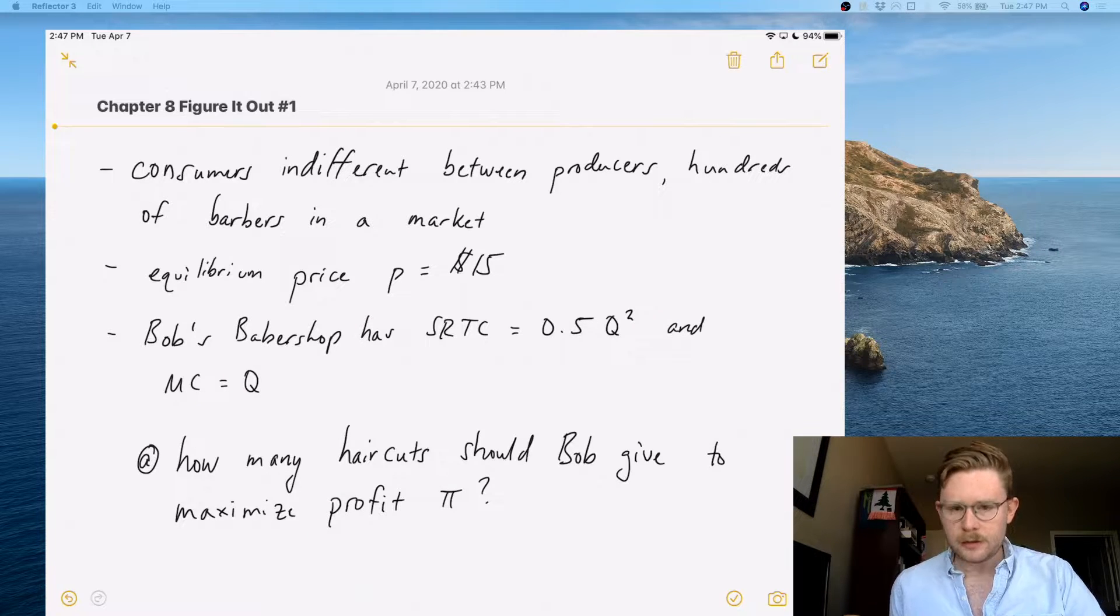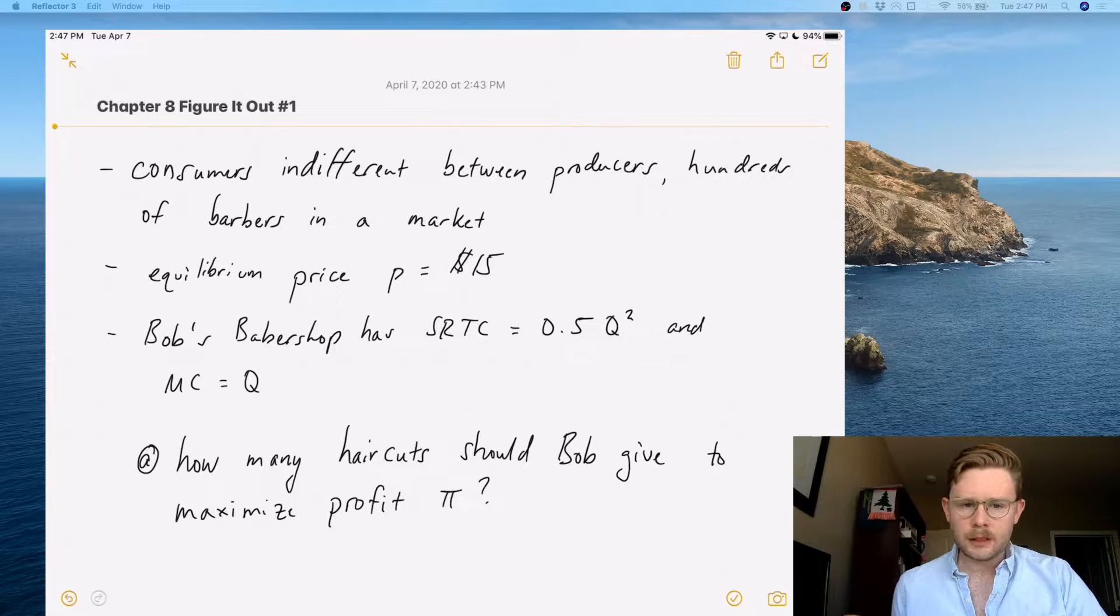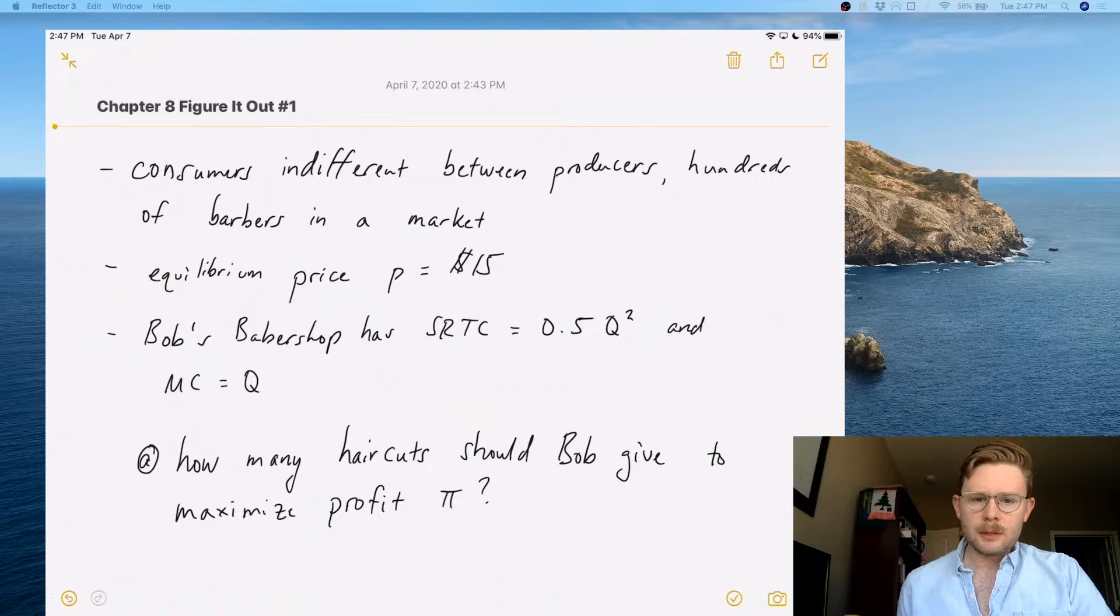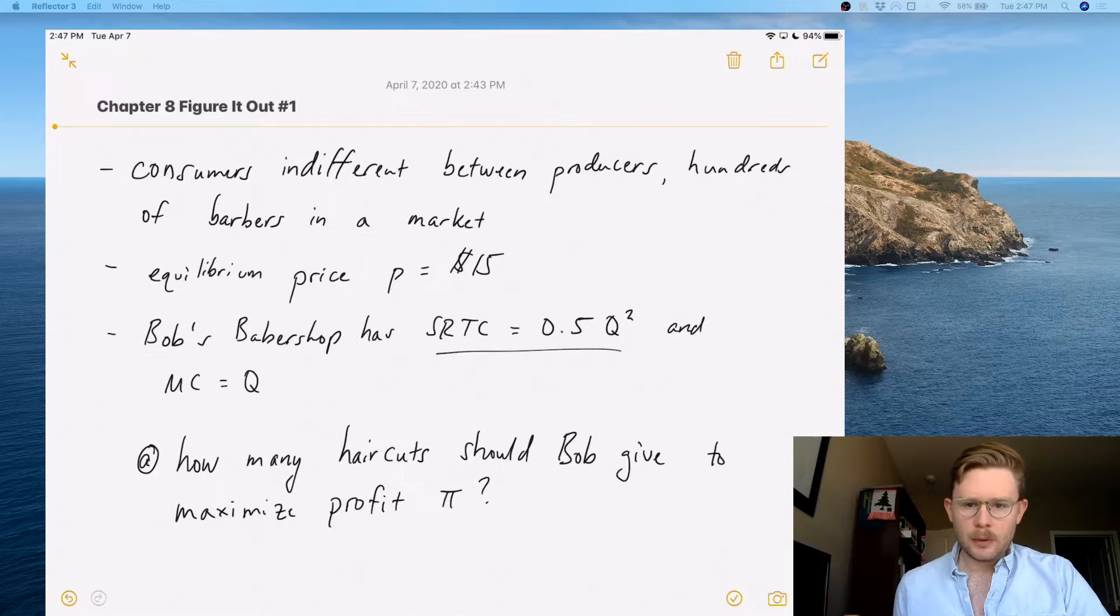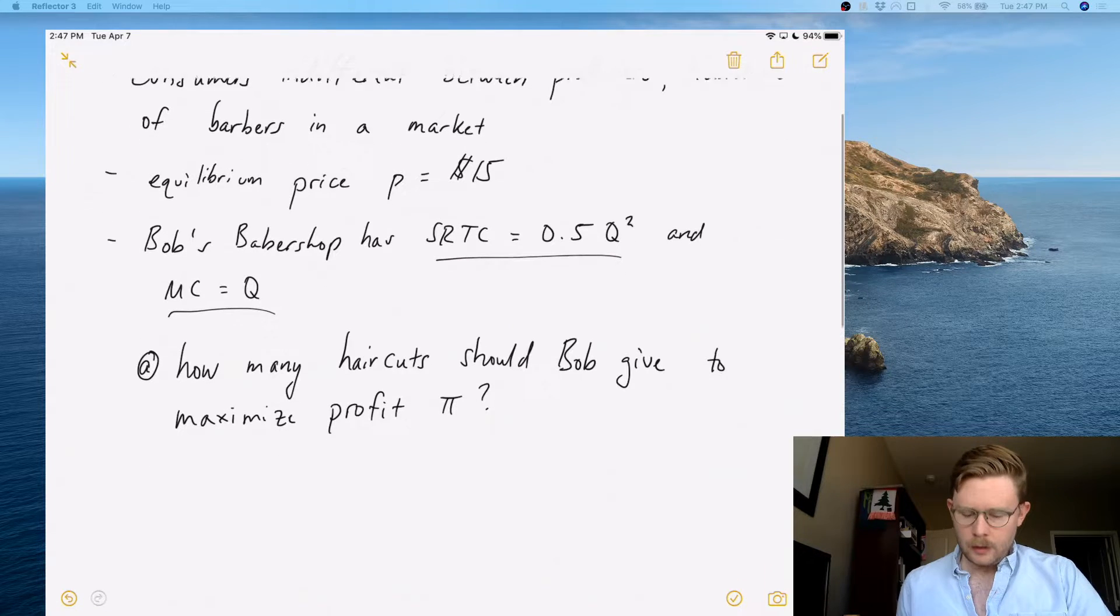So let's go through the first part. It says that consumers are indifferent between producers. We're talking about the haircut market here, and there are hundreds of barbers in the market. The equilibrium price P equals $15, and Bob's barbershop, which is one of the barbershops in the market, has this short-run total cost function of 0.5Q² and its marginal cost is equal to Q.